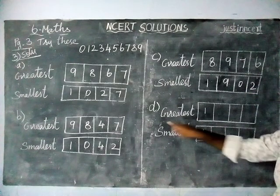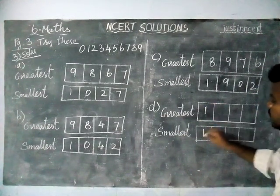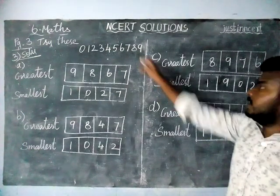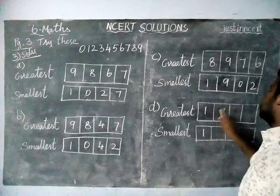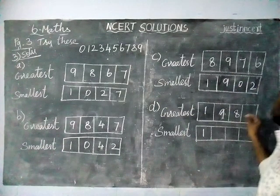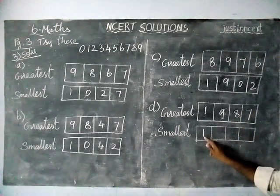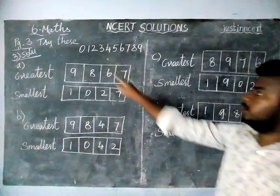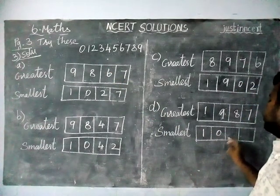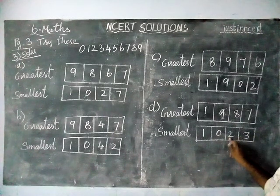Next is option D. The greatest number for option D is 1,023.